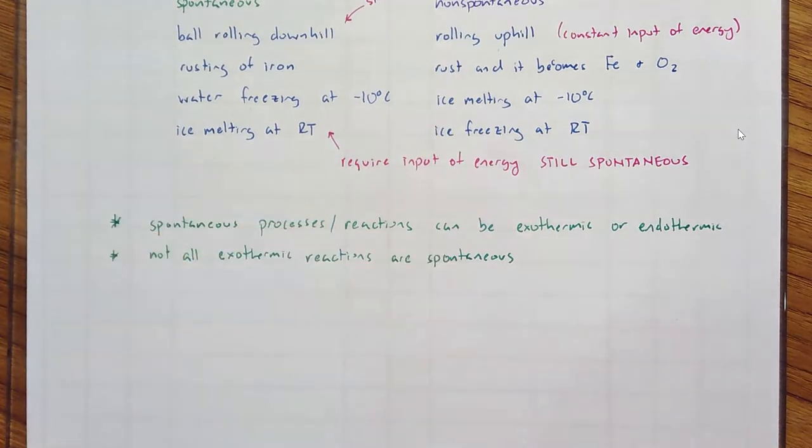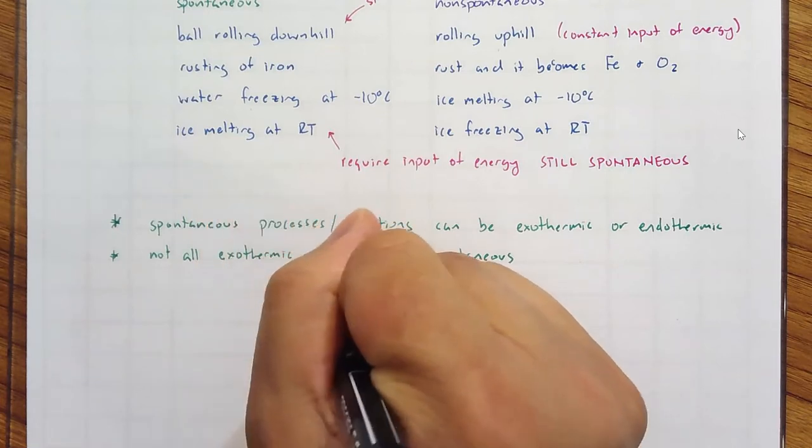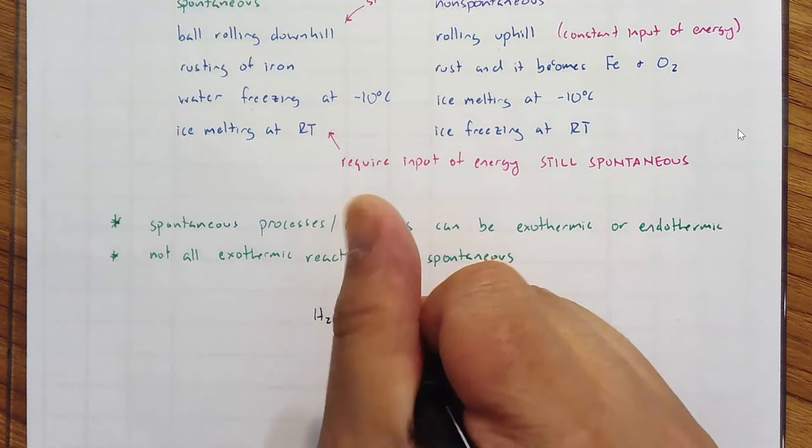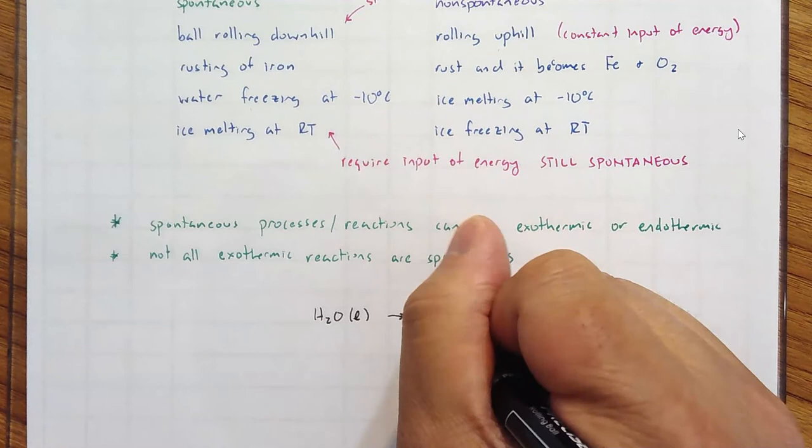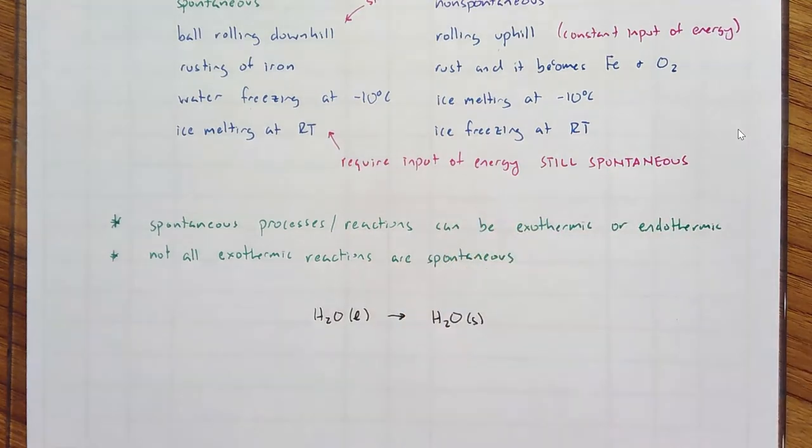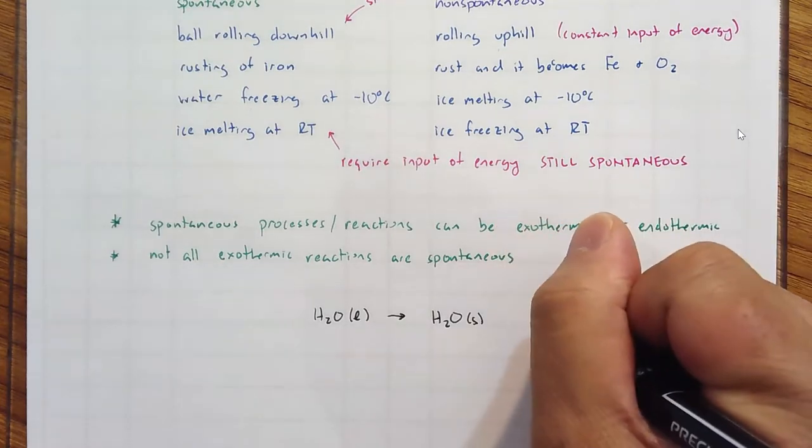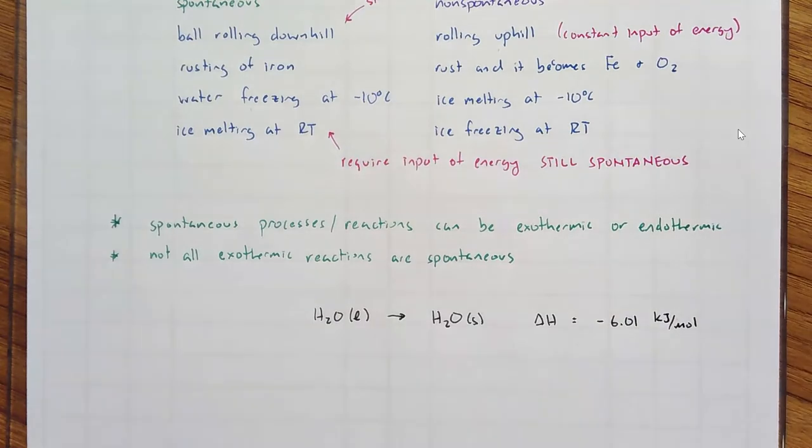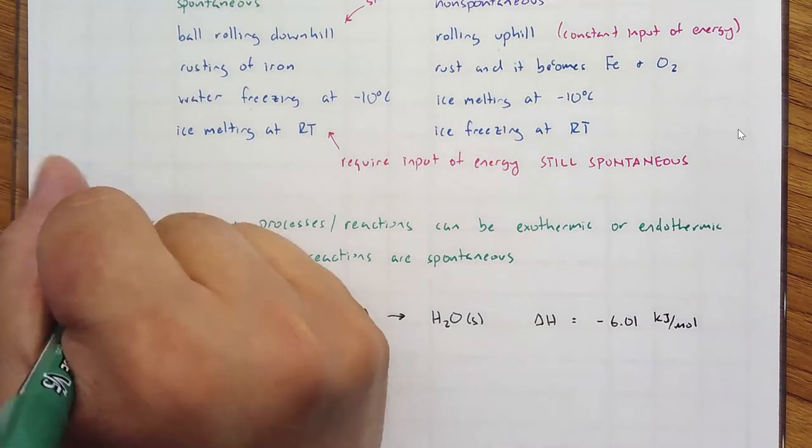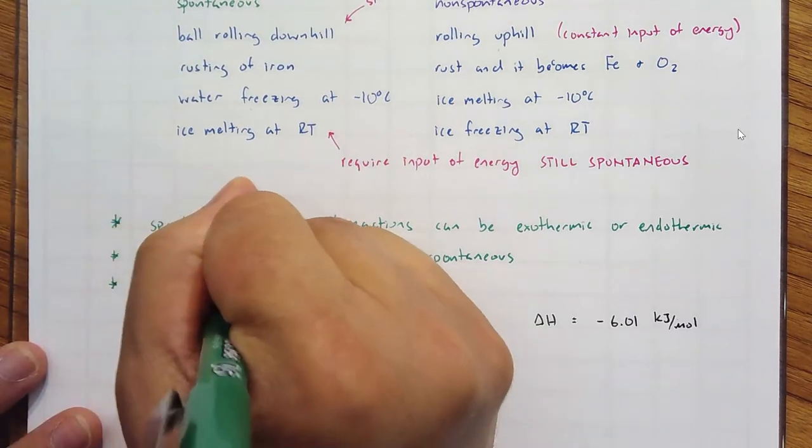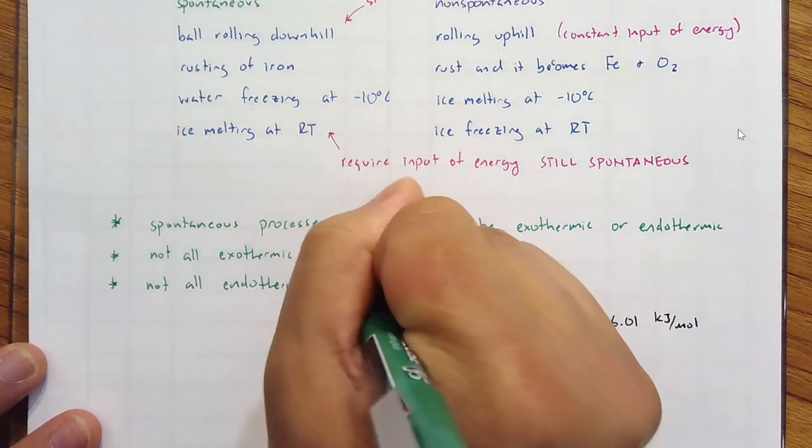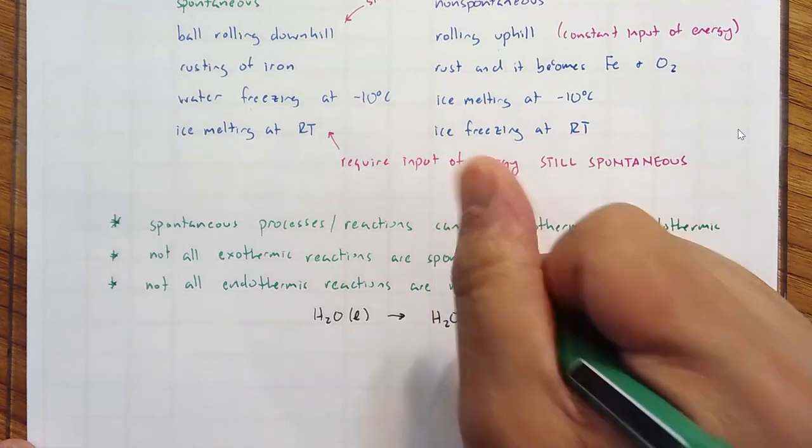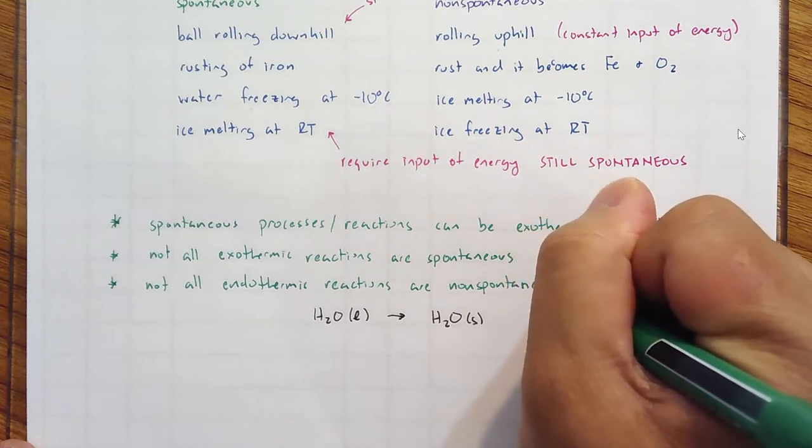Let me give you an example. What about water solidifying? H2O liquid goes to H2O solid. Delta H equals negative 6.01 kilojoules per mole. So not all endothermic reactions are non-spontaneous.